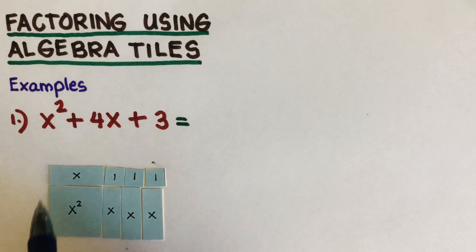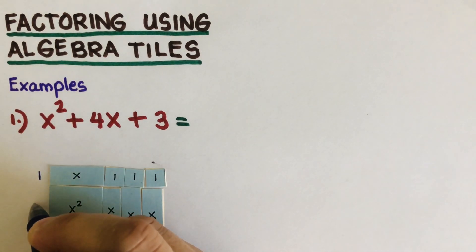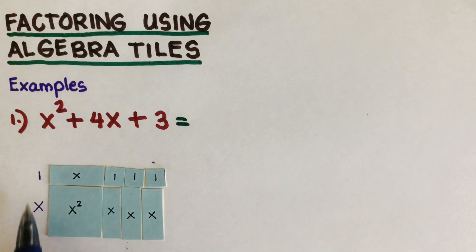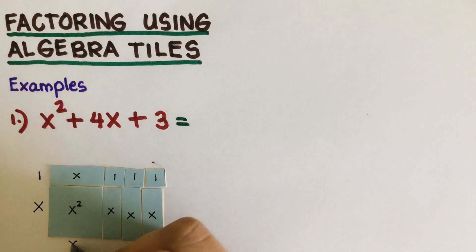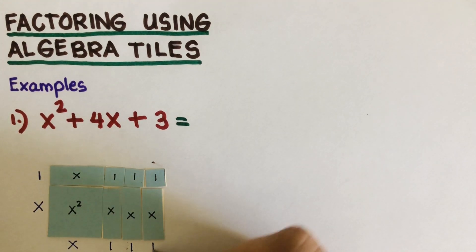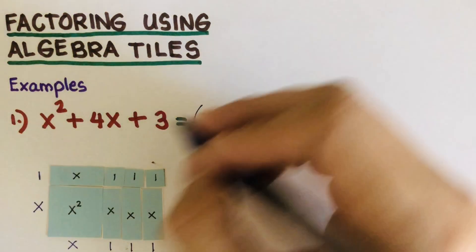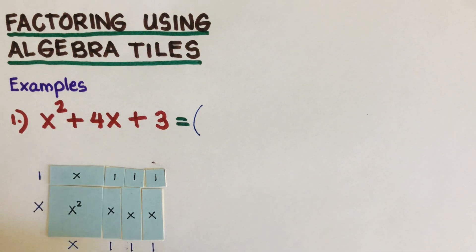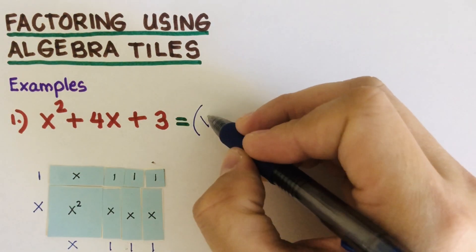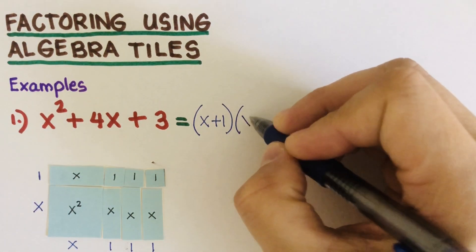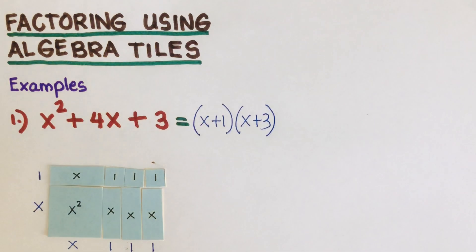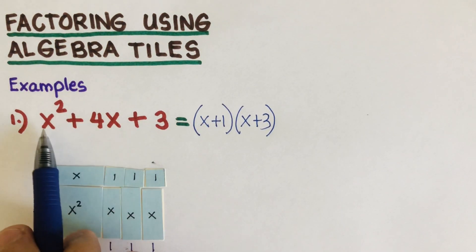We can see that if we label the sides, this side is one and this side is x. There's another video on how to label the sides of the algebra tile — I'll put the link in the description below. Along the bottom, the labels are x, 1, 1, and 1. So our factored form, which is the length times the width, is (x + 1)(x + 3).